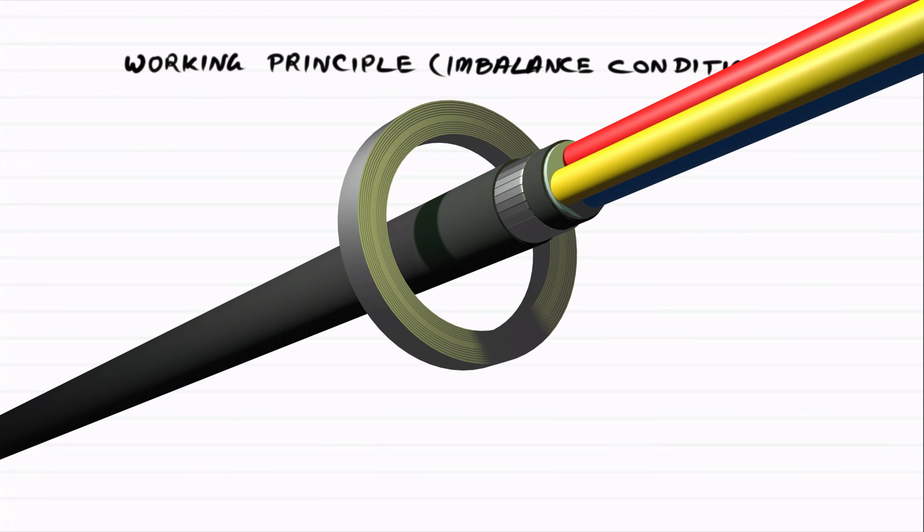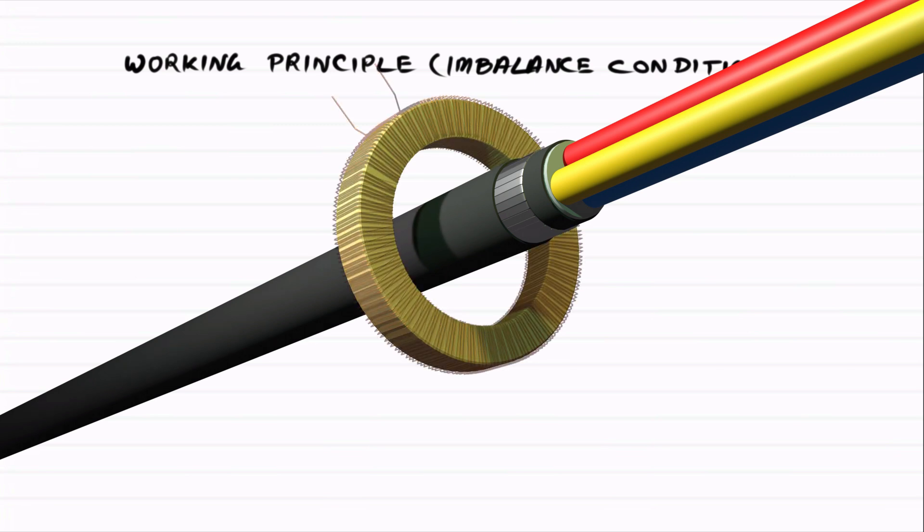The result, no net flux inside the core. If we wind a coil around this core, there won't be any EMF induced, because there is no flux linkage. So no current flows in the coil.